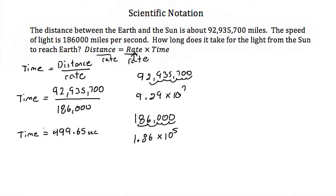Well then I can solve this. Time would be equal to 9.29 times 10 to the 7th over 1.86 times 10 to the 5th. And now to solve this, first I would do this in two steps. The first step would be taking 9.29 and dividing by 1.86. Well 9.29 divided by 1.86 is 4.99.